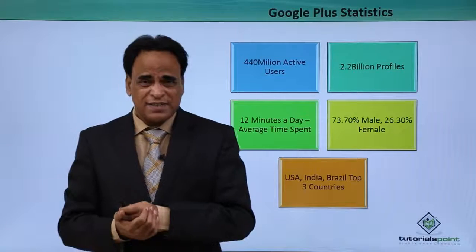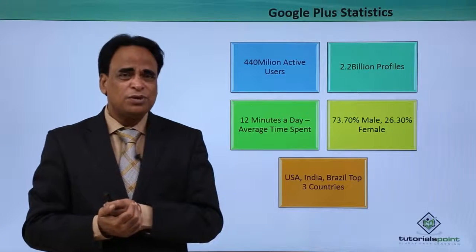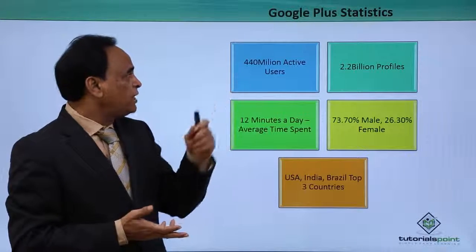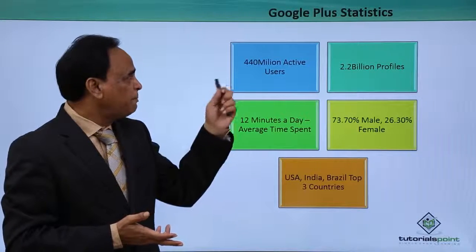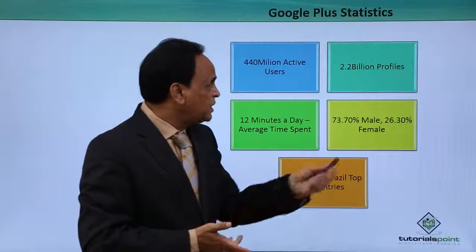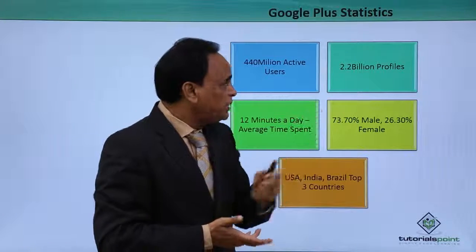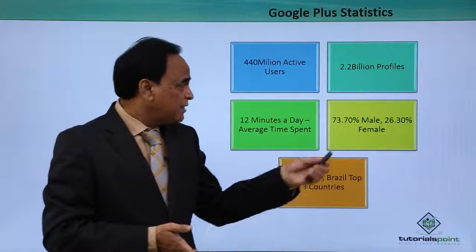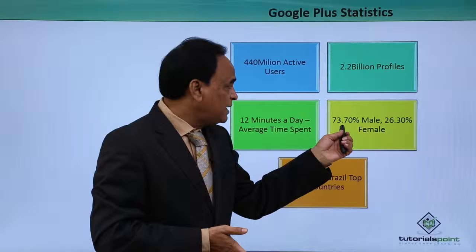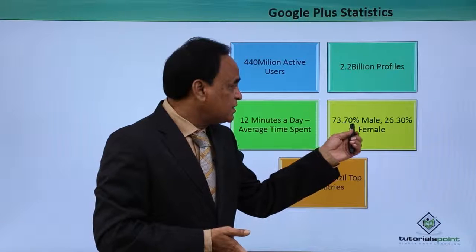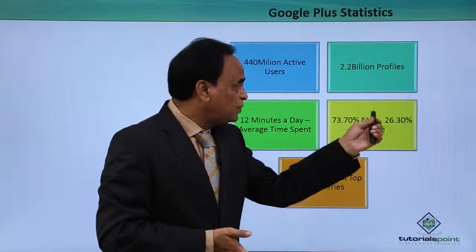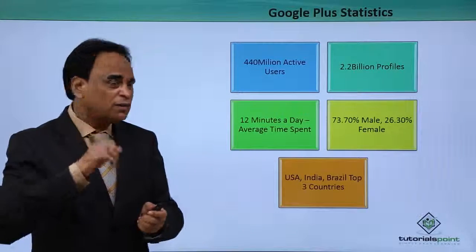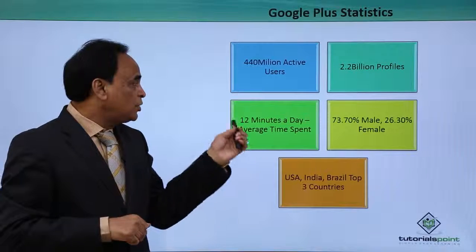Some of the statistics for Google Place: 440 million active users on Google Place, and 2.2 billion profiles are available.